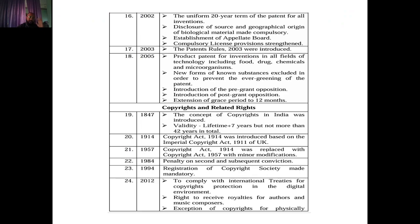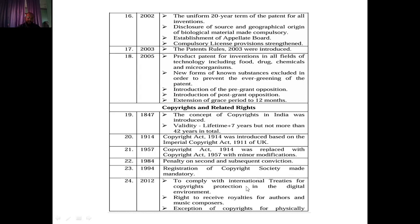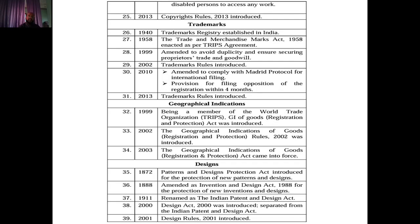Regarding copyrights: in 1847, the concept of copyright in India was introduced, with validity of lifetime plus seven years but not more than 42 years total. In 1914, the Copyright Act 1914 was introduced based on imperial law. In 1957, a post-independence Copyright Act replaced the 1914 act. In 1984, penalties on second and subsequent offenses were introduced. In 1994, registration of copyright societies was made mandatory. In 2012, digital rights to receive royalties for authors and music composers were introduced, and exceptions for physically disabled persons to access works were also introduced. Copyright Rules 2013 were then enacted.